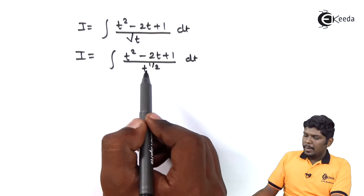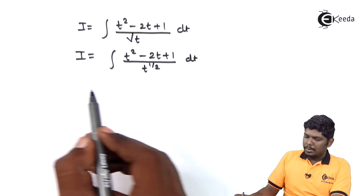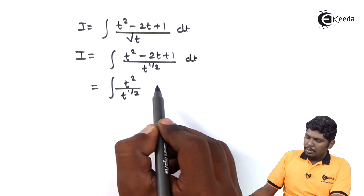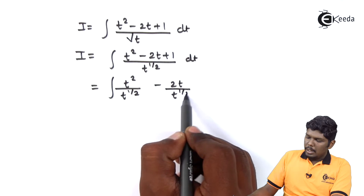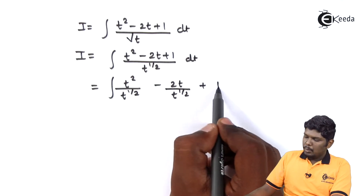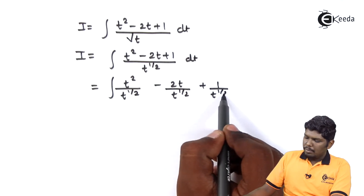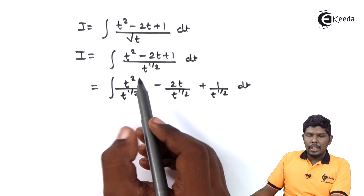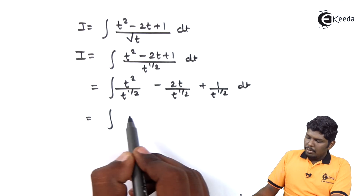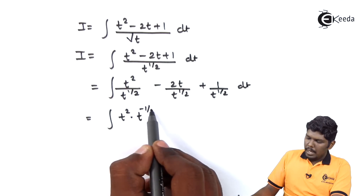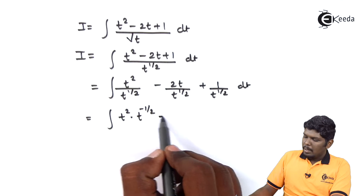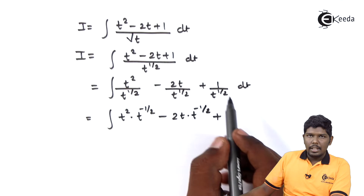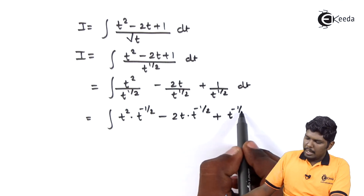In the next step we can separate t raised to half from all three terms, giving t squared upon t raised to half, minus 2t upon t raised to half, plus 1 upon t raised to half. Taking t raised to half into the numerator, we have t raised to 2 times t raised to minus half, minus 2t raised to minus half, plus t raised to minus half, dt.